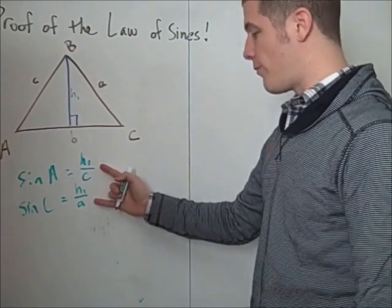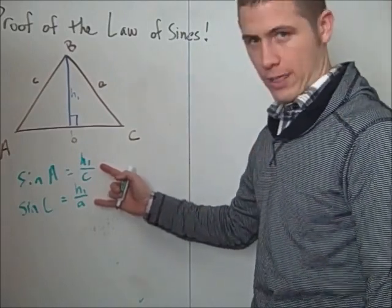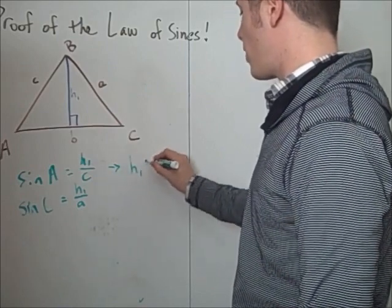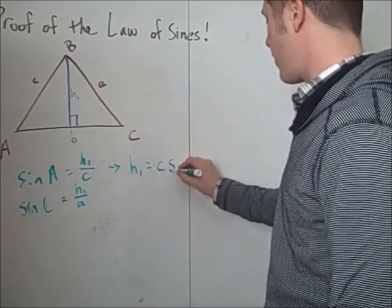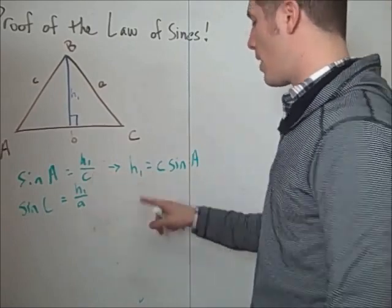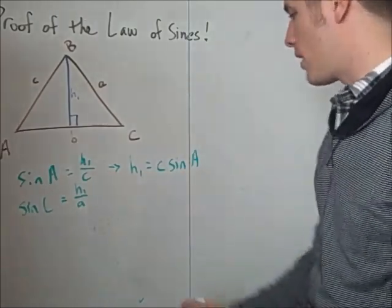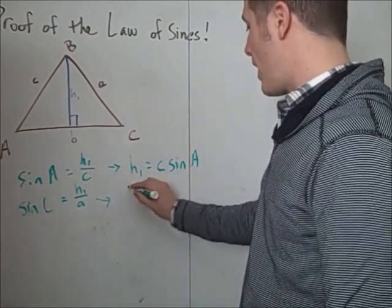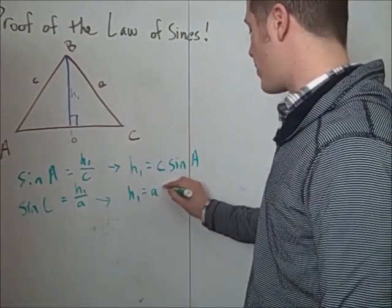So now we have two equations. Both involve the length H1. We can solve for H1 on both of these. For the first equation, we find that H1 is c times the sine of A. I multiplied both sides by c. For the second equation, I multiply both sides by a, and I get H1 is a times the sine of C.